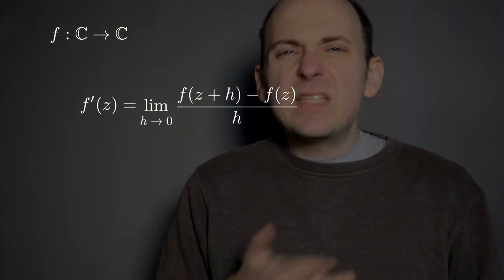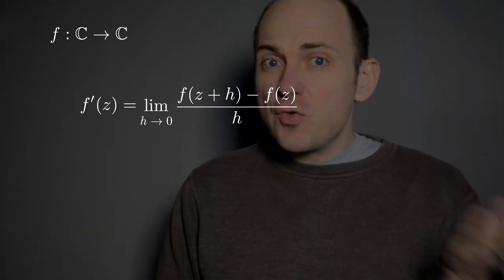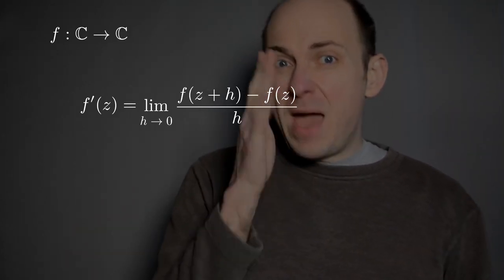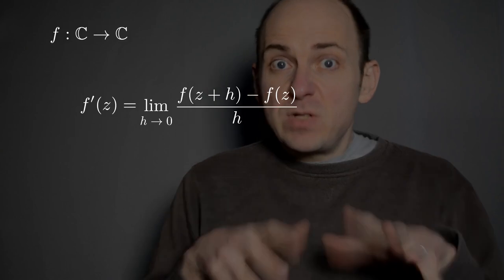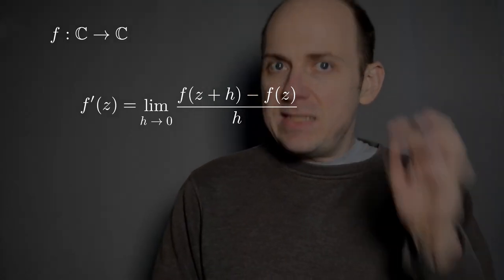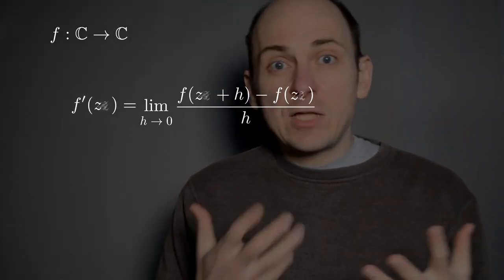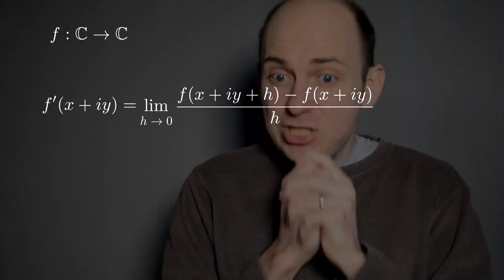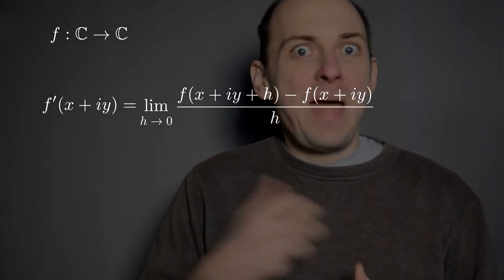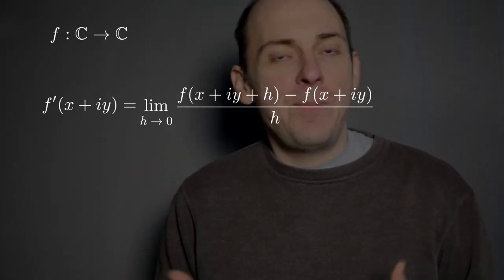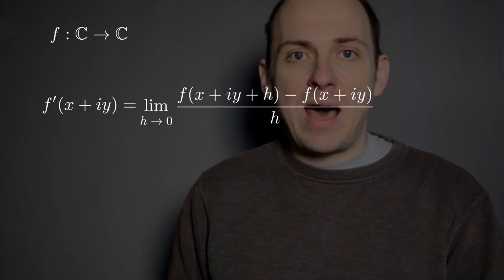The idea will be to study what this limit means by thinking about the real and the imaginary parts separately. To get started on that, let's replace z — this complex number — with x plus iy. I'm just separating out the real x and the imaginary y part, so I'm going to replace z with x plus iy.